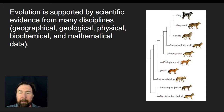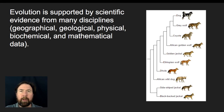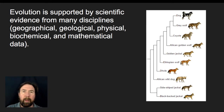Mathematical data includes both the mathematical analysis of biochemical data and modeling data that helps us calculate how allele frequencies shift, and also how we can compare two different data sets to approximate how long organisms may have been evolving independently, among many other mathematical operations.